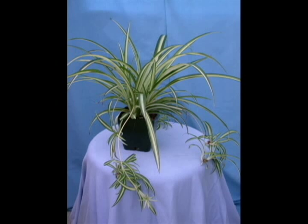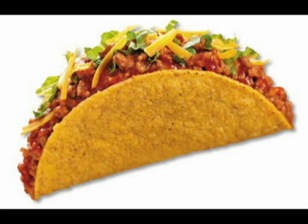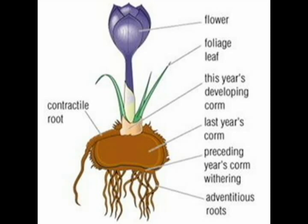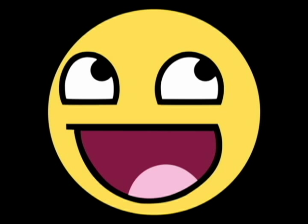Some plants have specialized structures for reproduction via fragmentation. In liverworts, most lichens, which are a symbiotic union of a fungus and a photosynthetic algae or bacteria, reproduce through fragmentation to ensure that new individuals contain both symbionts. These fragments can take the form of dust-like particles consisting of fungal hyphae wrapped around photobiont cells.